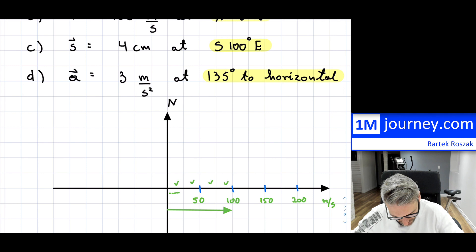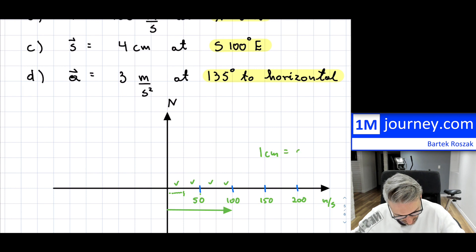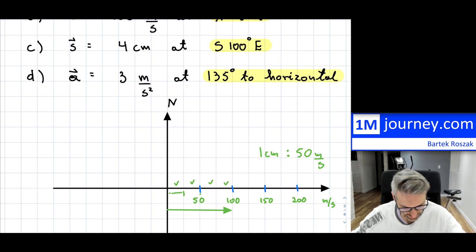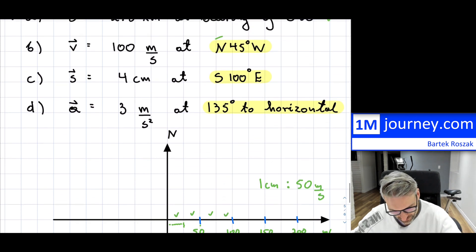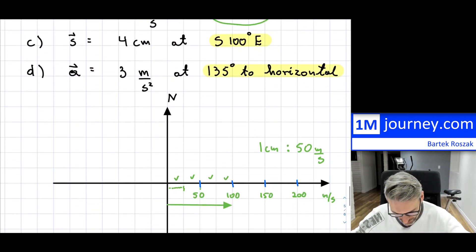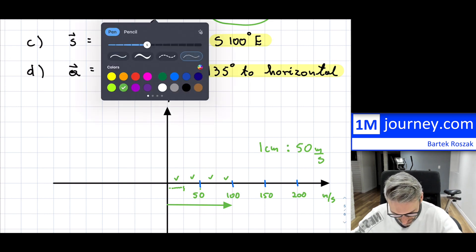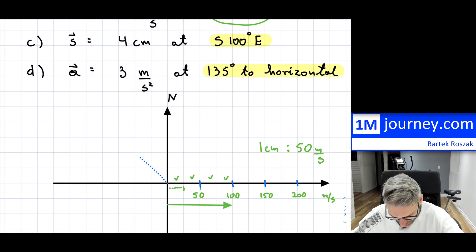So within the scale, I'll say one centimeter is equal to 50 meters per second. That is my ratio. And now I need to start from the north at 45 degrees. So this is going to be a little bit easier to do, because 45 degrees is kind of halfway through.